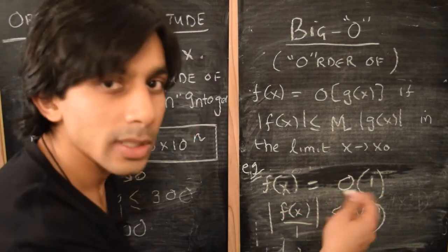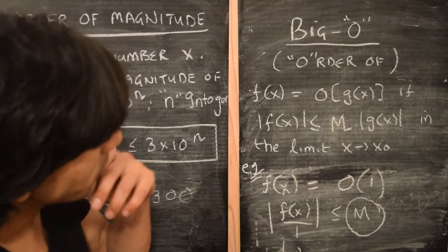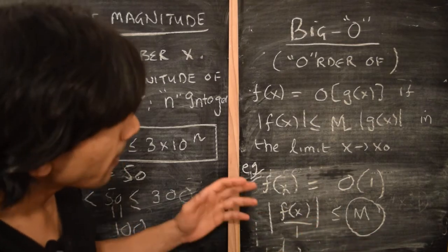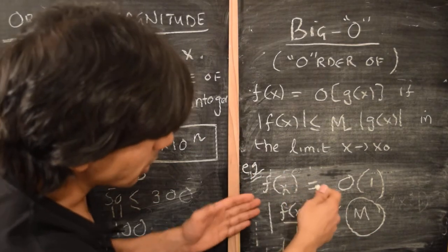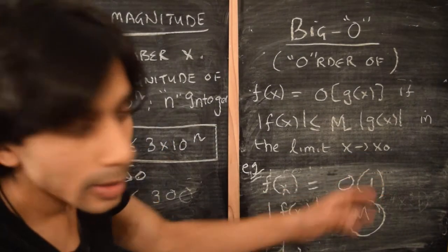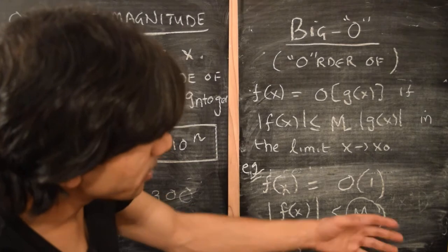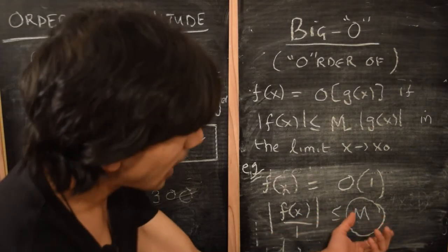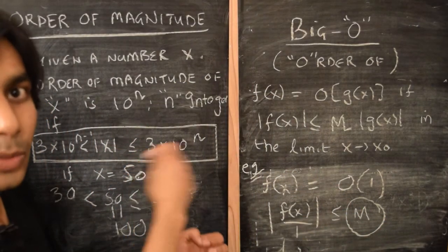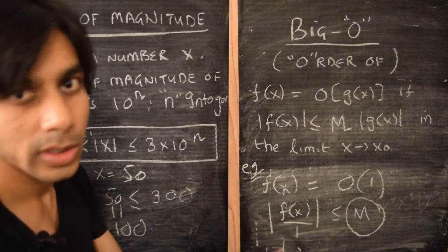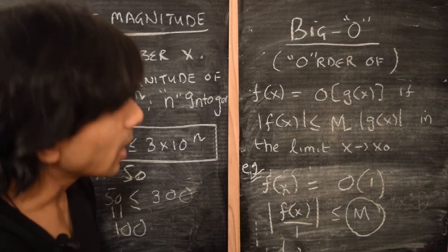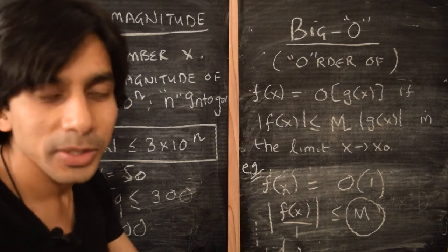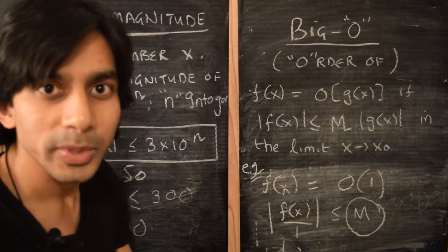In other words, M is a positive number. So if someone asks, given a function in a certain region, what is its order of magnitude? First, we have to establish that the function is bounded in that region — meaning it is big O of 1. Given that it's bounded, there is an upper bound capital M. To quantify the order of magnitude of the function in that region, we plug M into the order of magnitude definition and see what order of magnitude that number M has. Hopefully this is of some use, and let's continue talking about perturbation series in the next video. See you there, thanks.